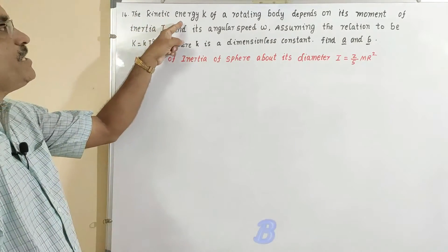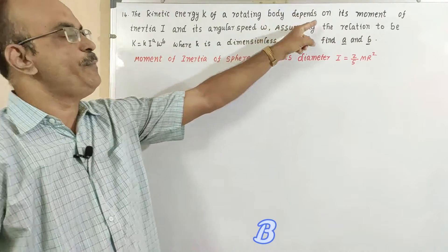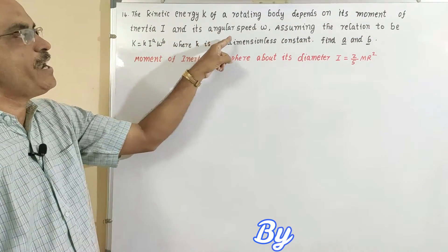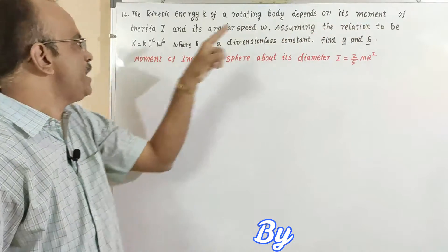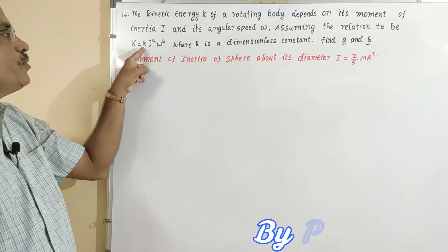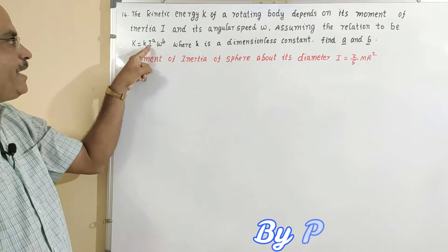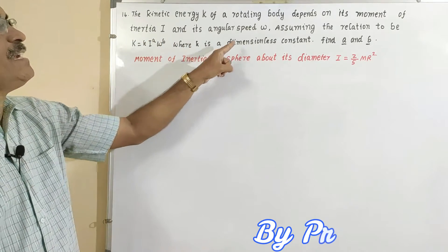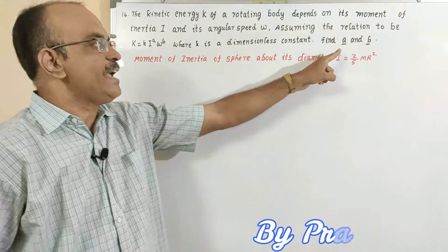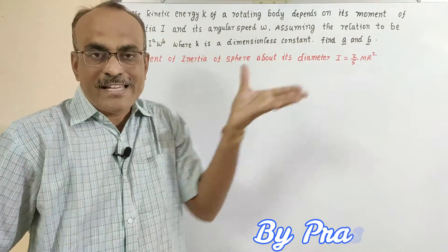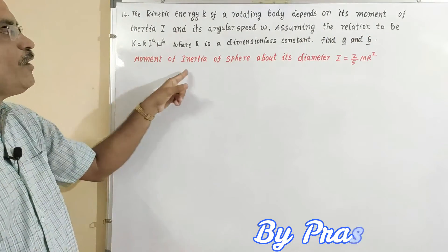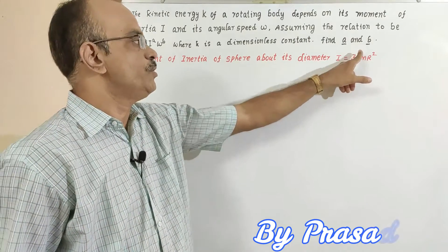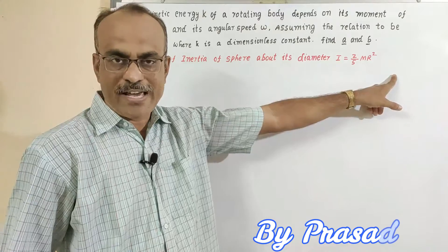The kinetic energy of a rotating body depends on its moment of inertia and angular speed. Assuming the relation to be K equals constant times I to the power of a and omega to the power of b, where k is a dimensionless constant. Find the values of a and b. The given hint: moment of inertia of a sphere about its diameter is I equals 2/5 m r squared.